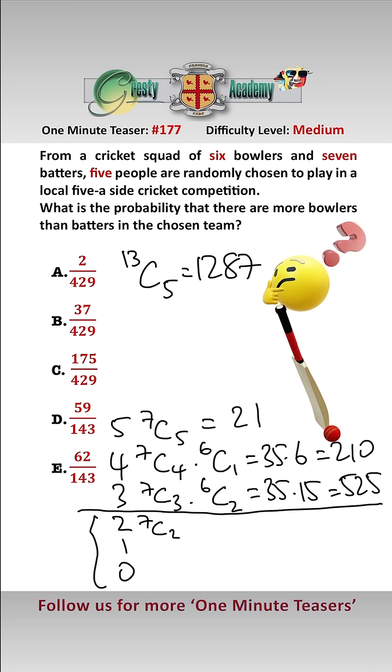So if there were two batters well it would be 7C2 times we'd have to pick three bowlers and that equals 21 times 20 which is 420.